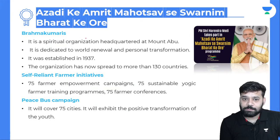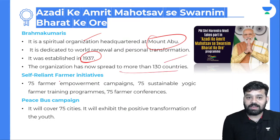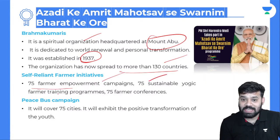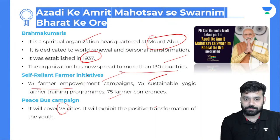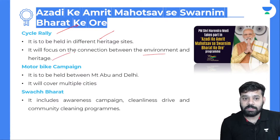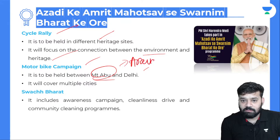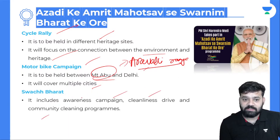About Brahma Kumari: it is a spiritual organization headquartered at Mount Abu, dedicated to the world's renewal and personal transformation. It was established in 1937 and has spread to more than 130 countries. Self-Reliant Farmer Initiatives include 75 farmer empowerment campaigns, 75 sustainable yogic farming training programs, and 75 farmer conferences. The Peace Bus campaign will cover 75 cities and exhibit positive transformation. There is also a cycle rally to be held at different heritage sites, focusing on the connection between environment and heritage. A motorbike campaign will be held between Mount Abu and Delhi, covering multiple cities. Swachh Bharat initiatives include awareness campaigns, cleanliness drives, and community cleanliness programs.